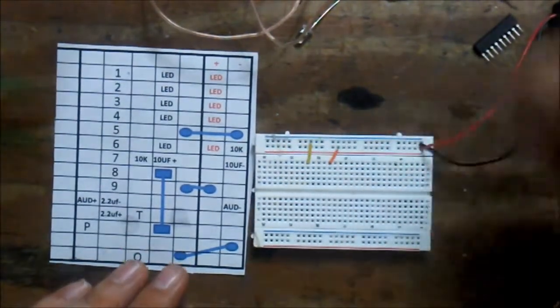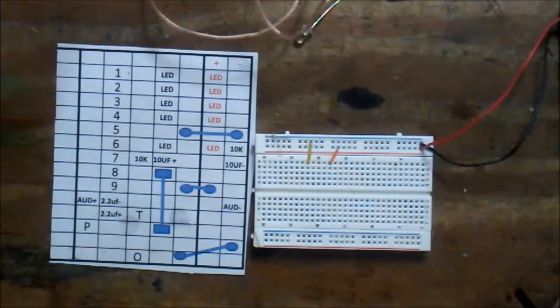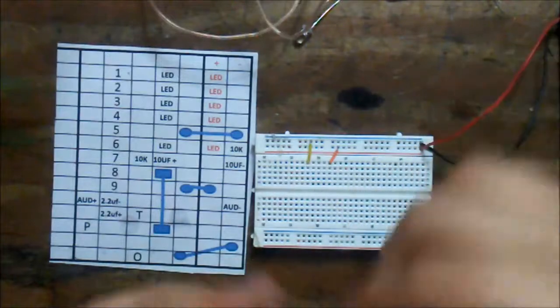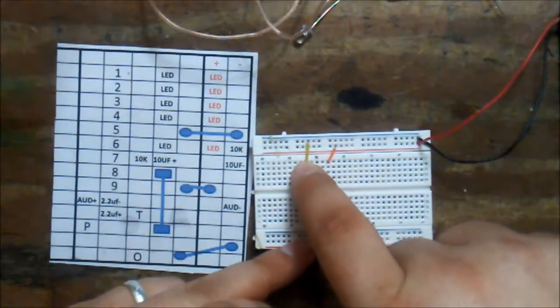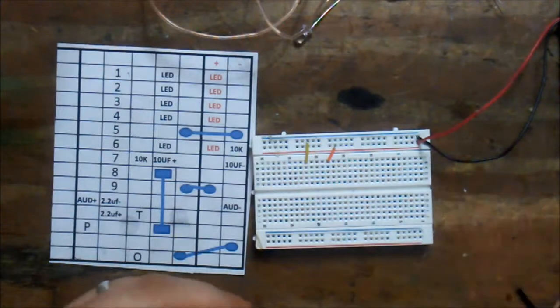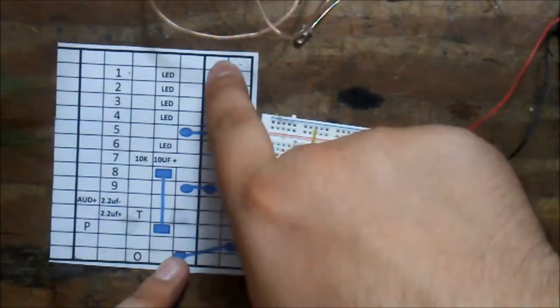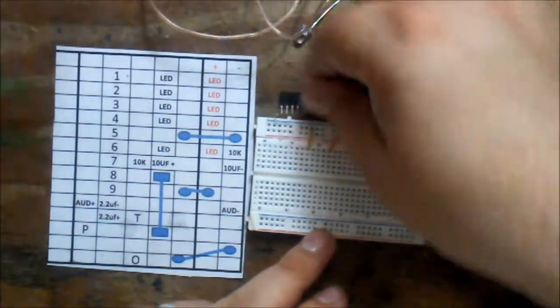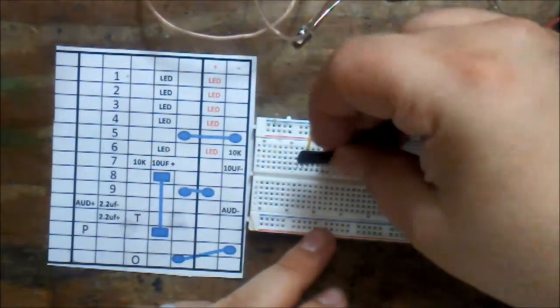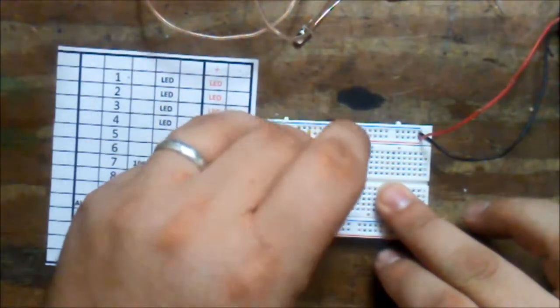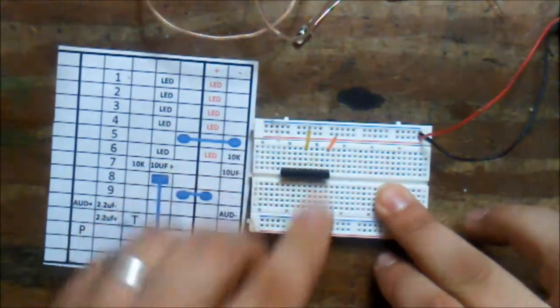Now let's put the AN688. Here's the divot, so it's going to be right there. Here is my negative, and here's my positive. Pin number nine is my positive. So, put it right there.